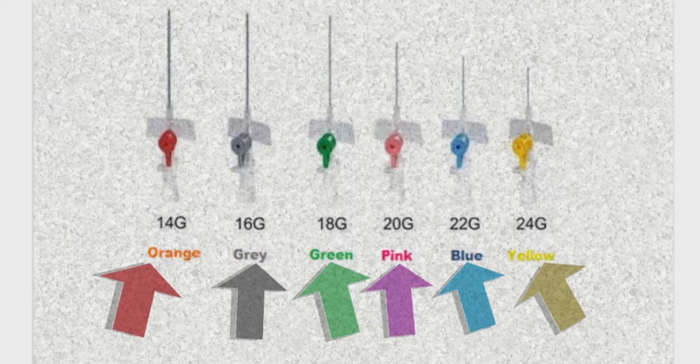The gauge sizes are of interval of 2, from gauge 14 to 16 up to 24. The smaller the gauge size, the bigger the diameter of the cannula.